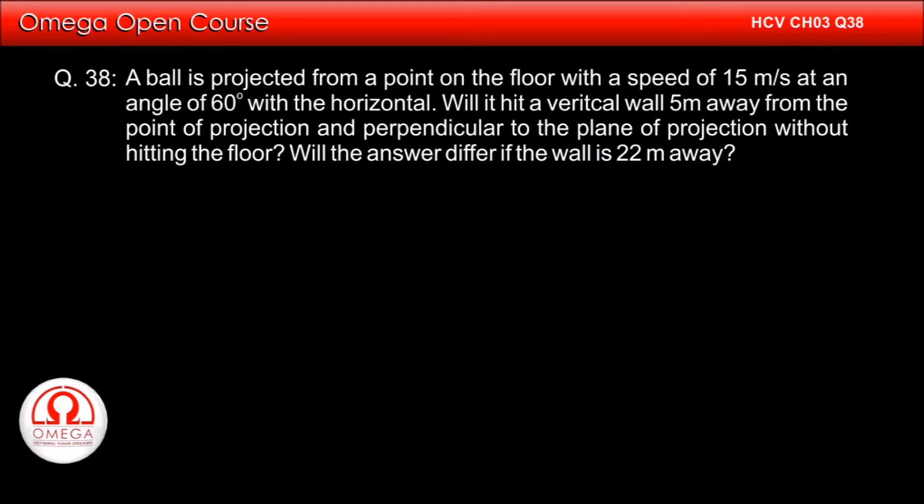A ball is projected from a point on the floor with a speed of 15 meter per second at an angle of 60 degree with the horizontal. Will it hit a vertical wall 5 meter away from the point of projection without hitting the floor? Will the answer differ if the wall is 22 meter away?